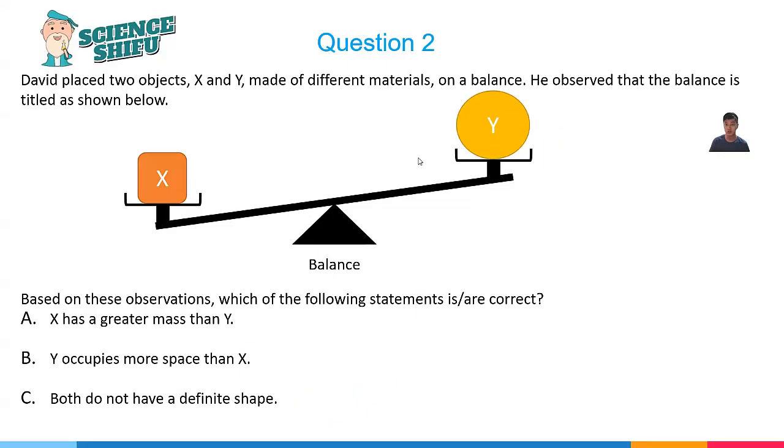On to question two. David placed two objects, X and Y, made of different materials on a balance. He observed that the balance is tilted as shown below. And based on these observations, which of the following statements is or are correct?